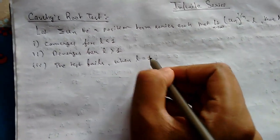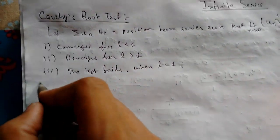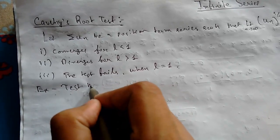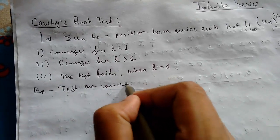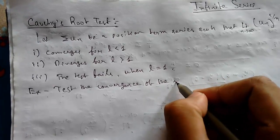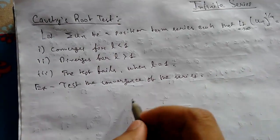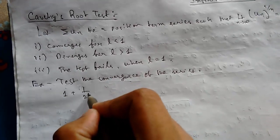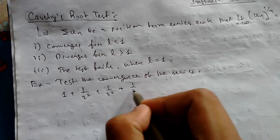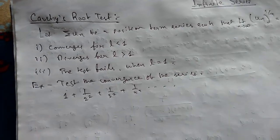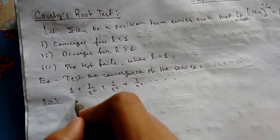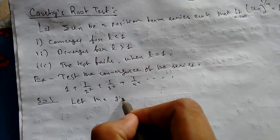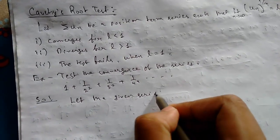To understand this Cauchy Root Test, let me show you an example. This will get everything clear. Test the convergence of the series: 1/1 + 1/2² + 1/3³ + 1/4⁴ + ... up to infinity. Solution: Let the given series be summation u_n.